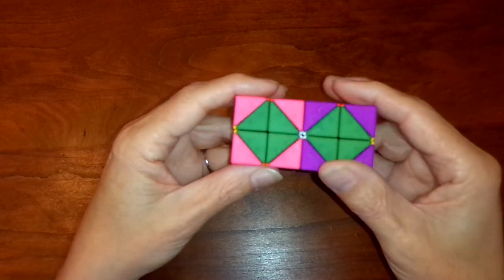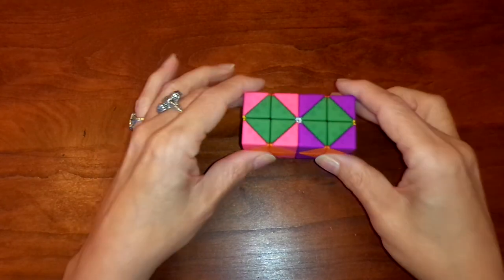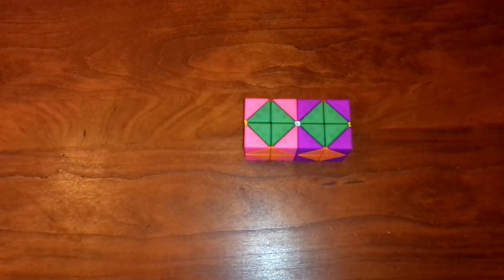So there you have it. The canonical moves for my 2x2x2x2. Thank you.